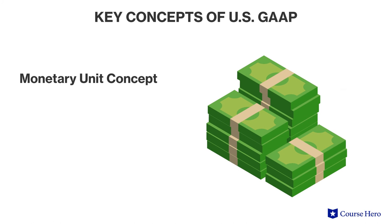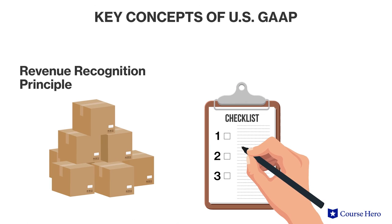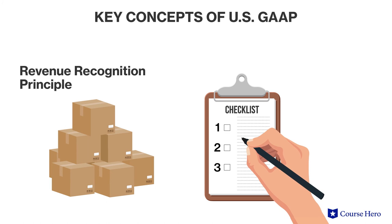Concept number four is the monetary unit concept. The monetary unit concept states that all transactions must be expressed as a currency, such as the U.S. dollar. Concept number five is the revenue recognition principle.